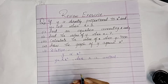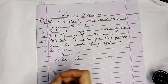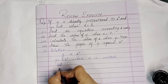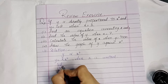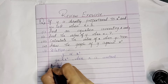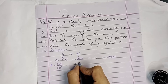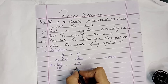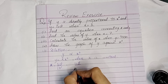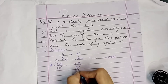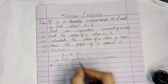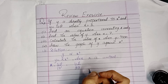We will first find out k. So y equals k times x cubed. Substituting: 108 equals k times 3 cubed. 3 times 3 is 9, 9 times 3 is 27. And 27 times 4 is 108.